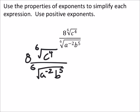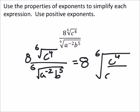Here's why I'm doing this like this. It's because I have the same index for the numerator and denominator. Meaning that I can make this 8 times the 6th root of c to the 4th over a to the negative 2 times b to the 5th.